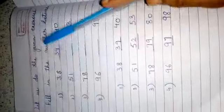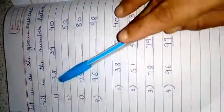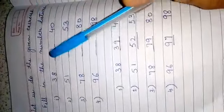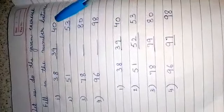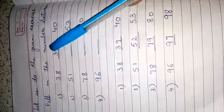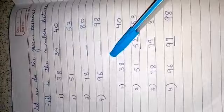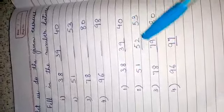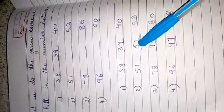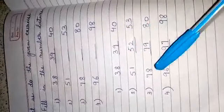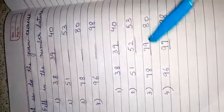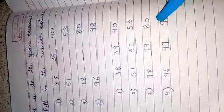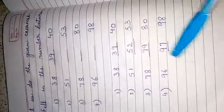Let us do the given exercise. Fill in the number between. The number between 38 and 40 will be 39. Between 51 and 53 the number will be 52. The number between 78 and 80 will be 79. The number between 96 and 98 will be 97.